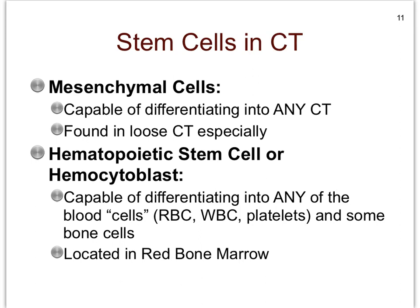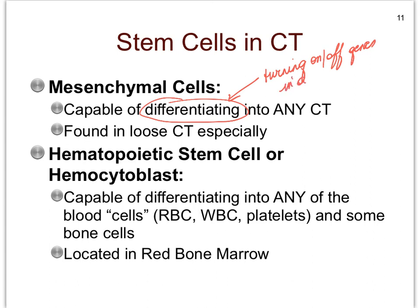The mesenchymal cells function as stem cells for our connective tissue, capable of differentiating into any connective tissue. Remember what differentiation means: it means the turning on and off of specific genes in a cell, and that makes the cell more specialized.